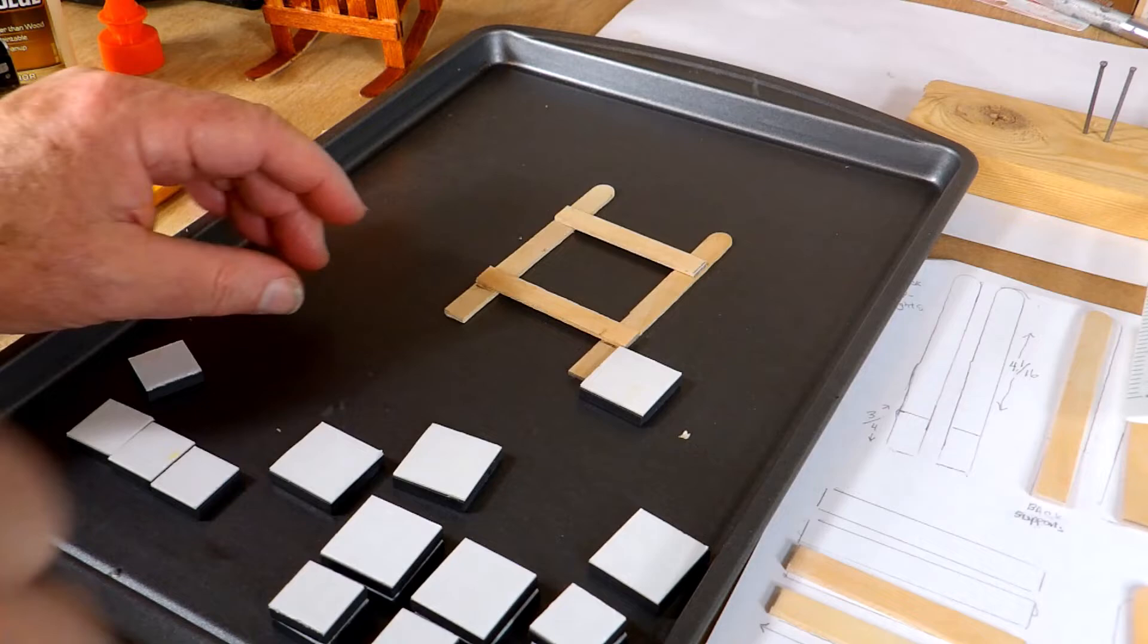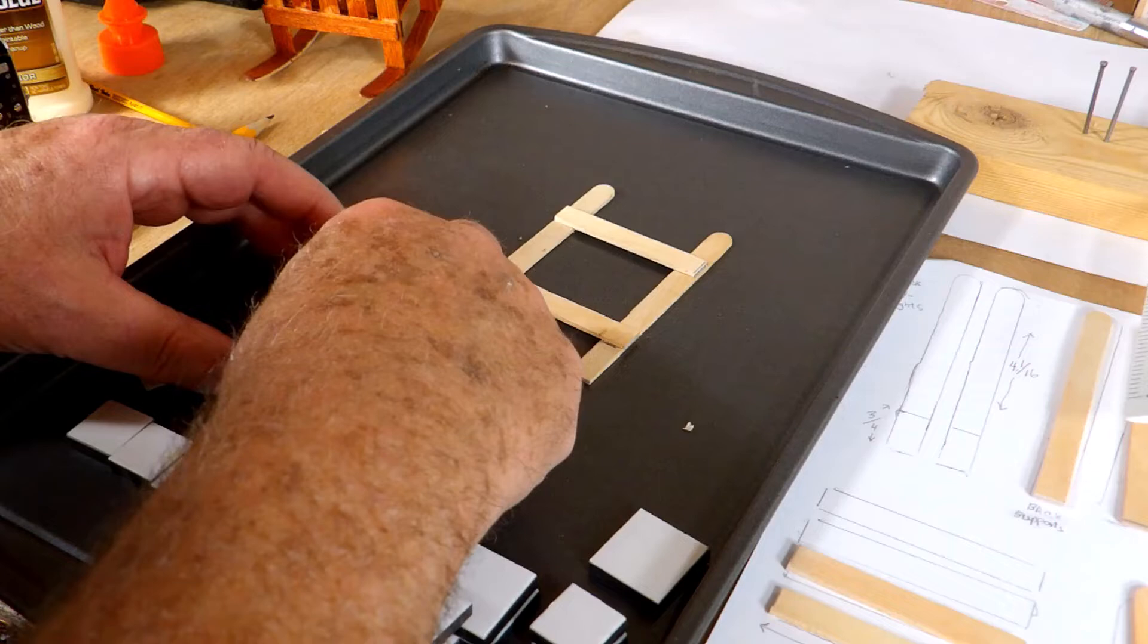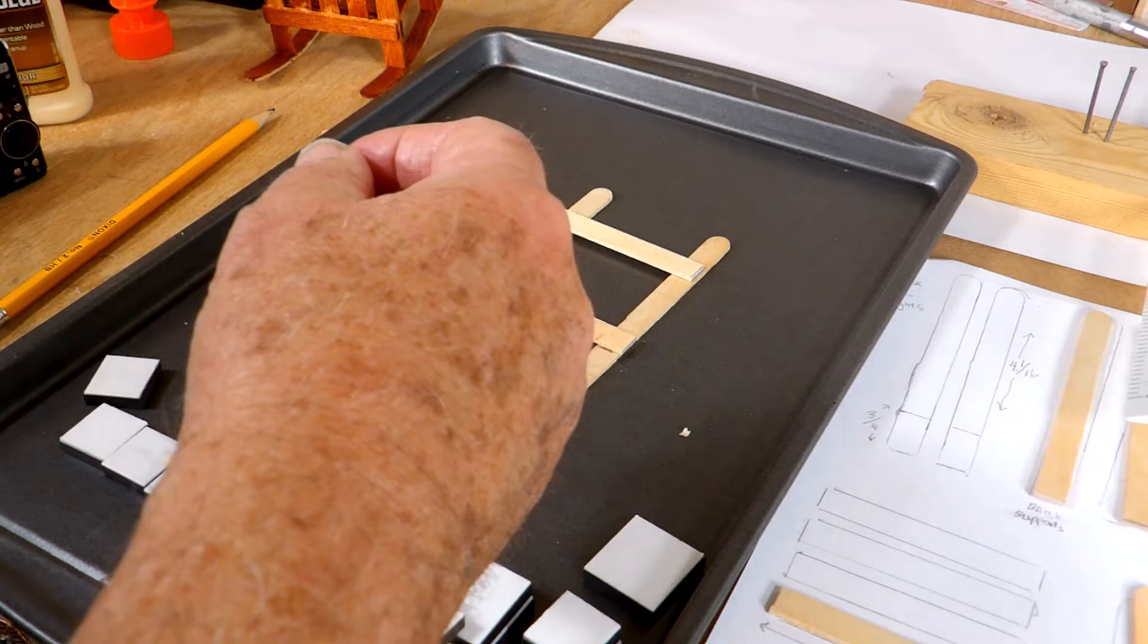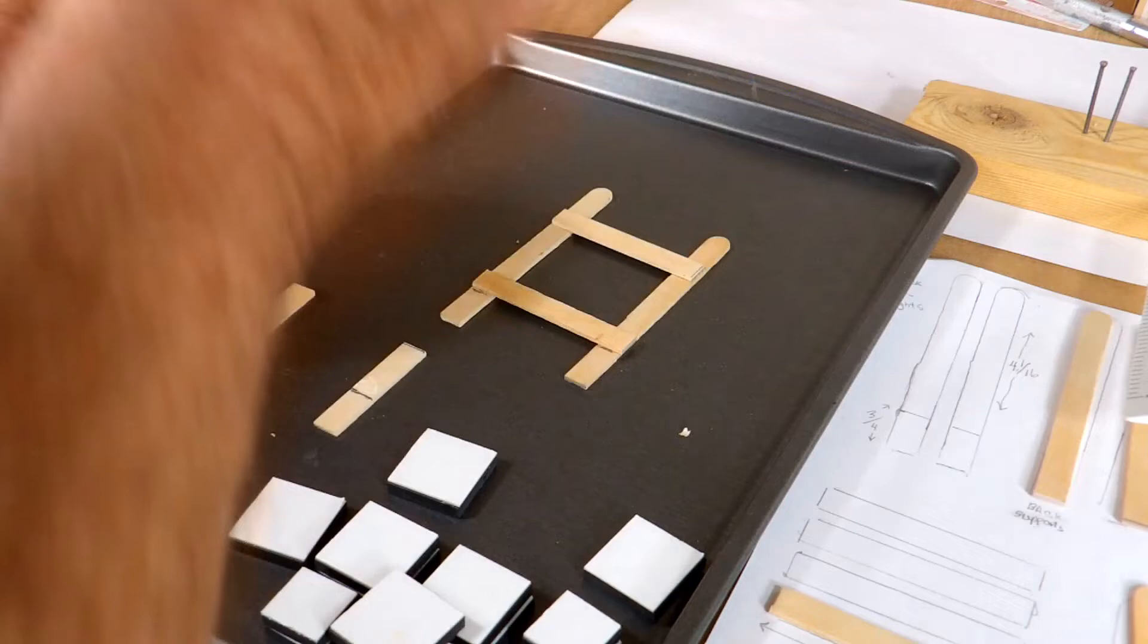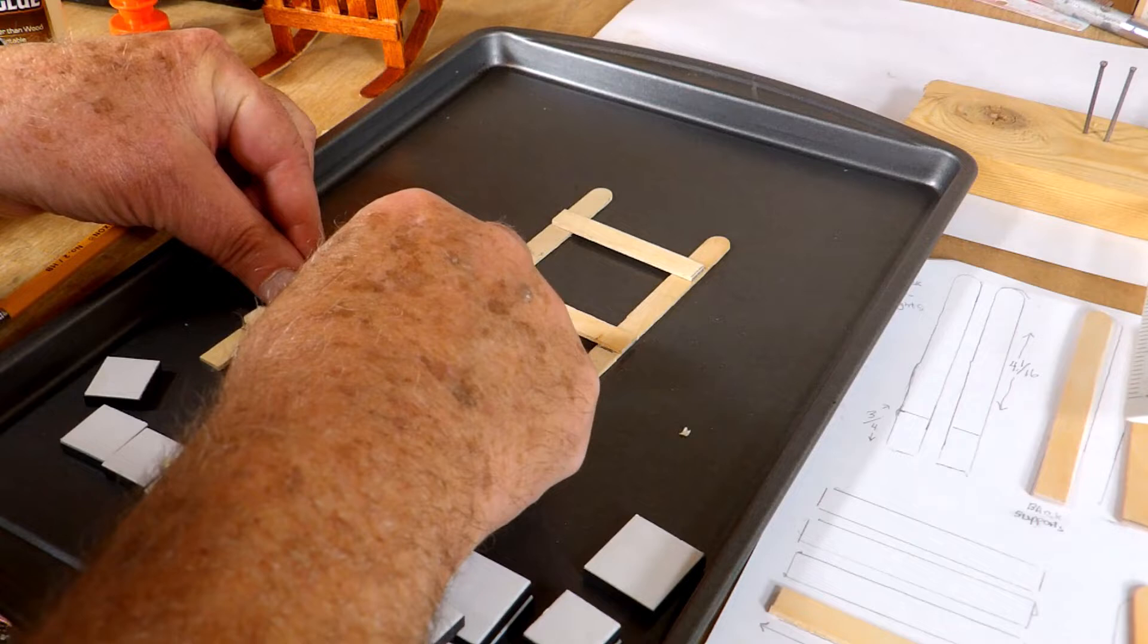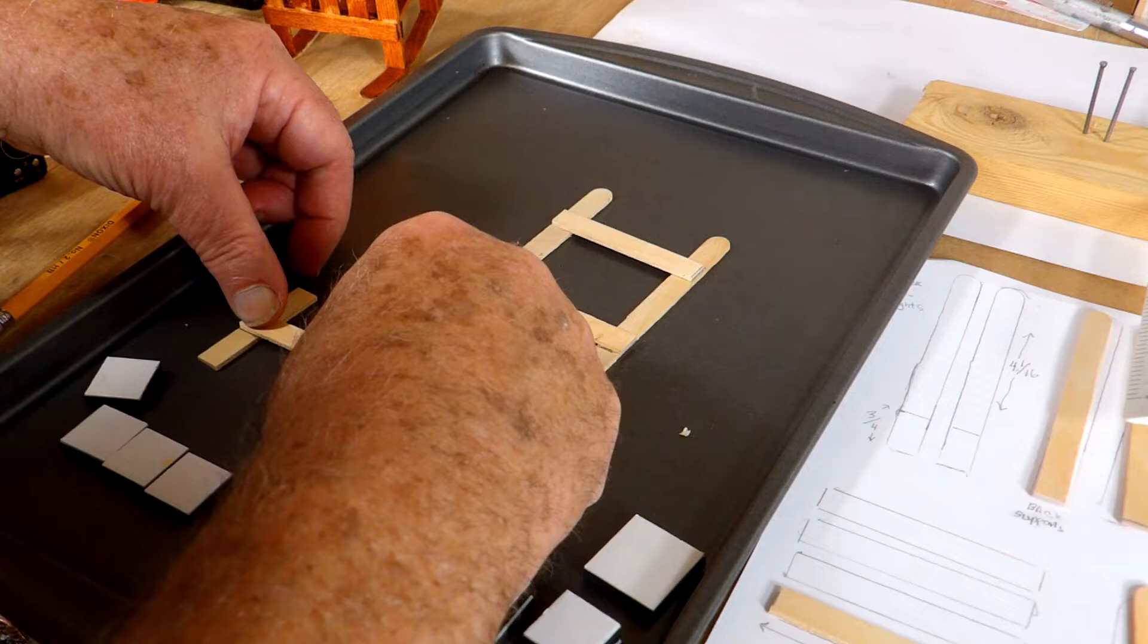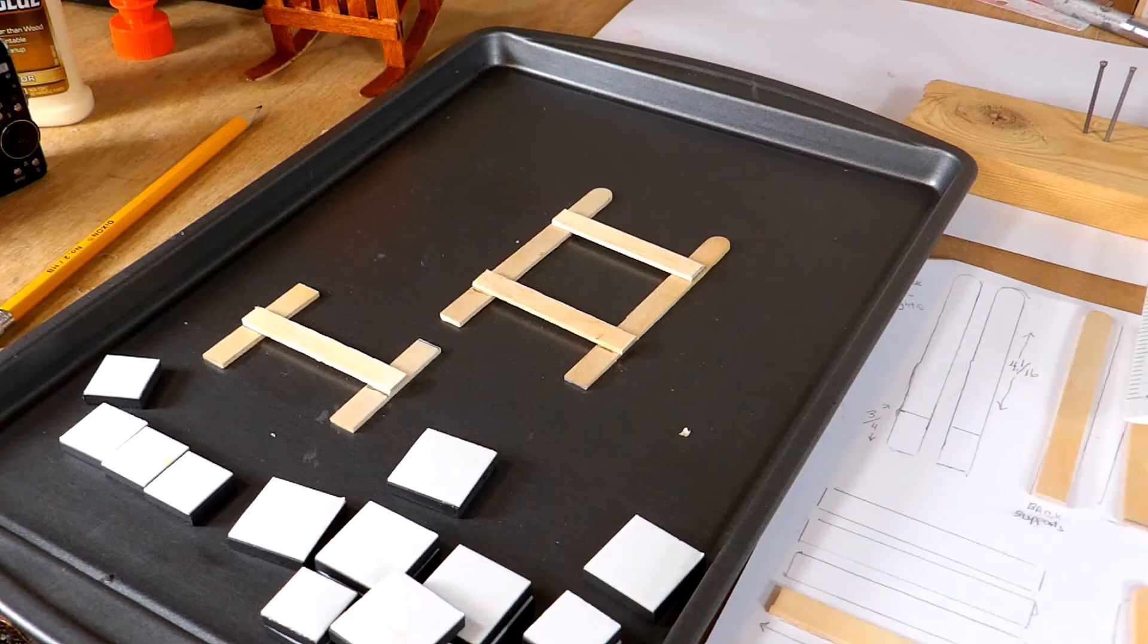While that is drying, we can also do the front one and its support. We'll take one of these and put some glue on it, and put that like that. Make sure they're kind of perpendicular. So that's what we can do at this point. We'll be back in a little bit because those need to dry before we can go on.